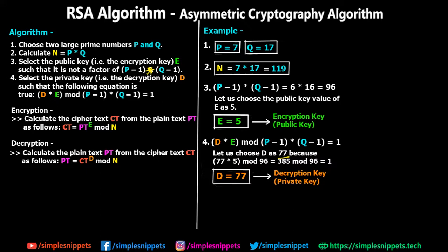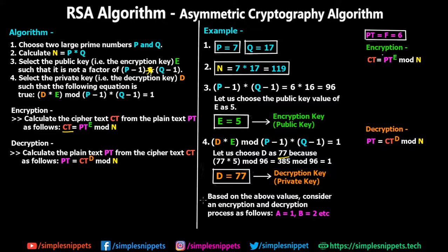The encryption formula is: ciphertext CT = PT^E mod N. The decryption formula is: plaintext PT = CT^D mod N. While encrypting we use E, the encryption key, and while decrypting we use D, the decryption key. This is why the RSA algorithm is asymmetric in nature. Let's now perform those calculations based on all the values we have derived.